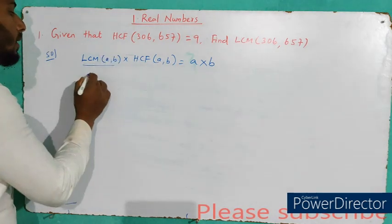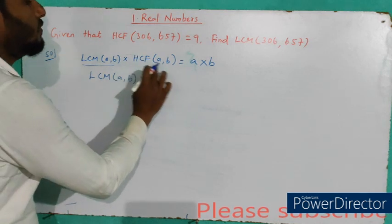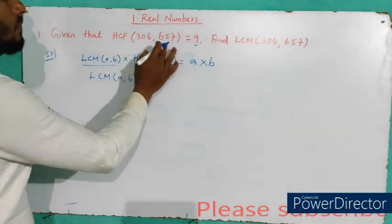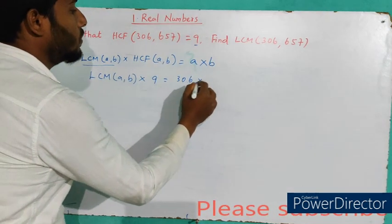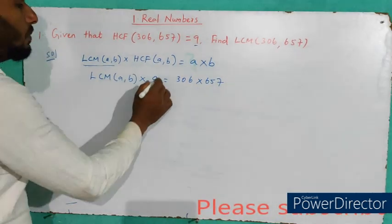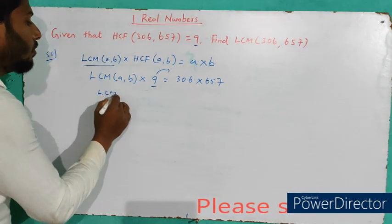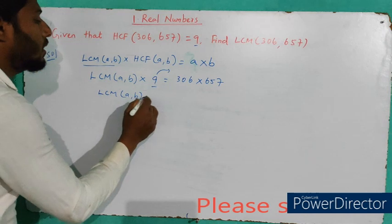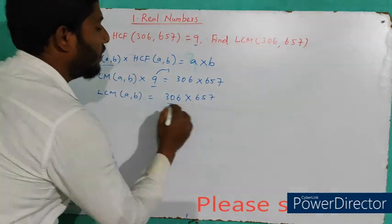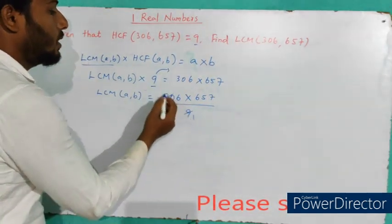We need to find LCM of (a, b). HCF of (a, b) is given as 9, and the product a into b means 306 into 657. Rearranging, LCM of (a, b) equals 306 into 657 divided by 9. Let's cancel — 9 goes into 306: 9 ones are 9, 9 threes are 27, so dividing gives 34, with 657 remaining.